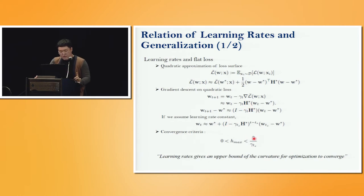This series converges to zero and reaches global minimum if this term is smaller than one. Therefore, we can get the convergence criteria like this is maximum value of this Hessian matrix. This means that if the curvature of quadratic losses is high, then learning rate should be small to converge.